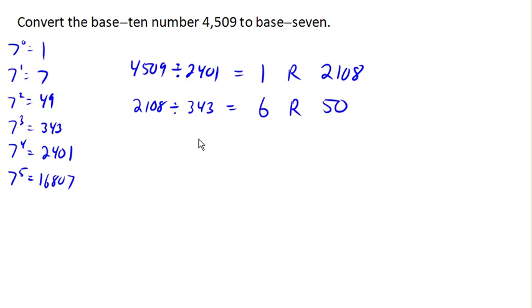I bring that value down. 50 divided by next lowest power. 49 is 1 with a remainder of 1.